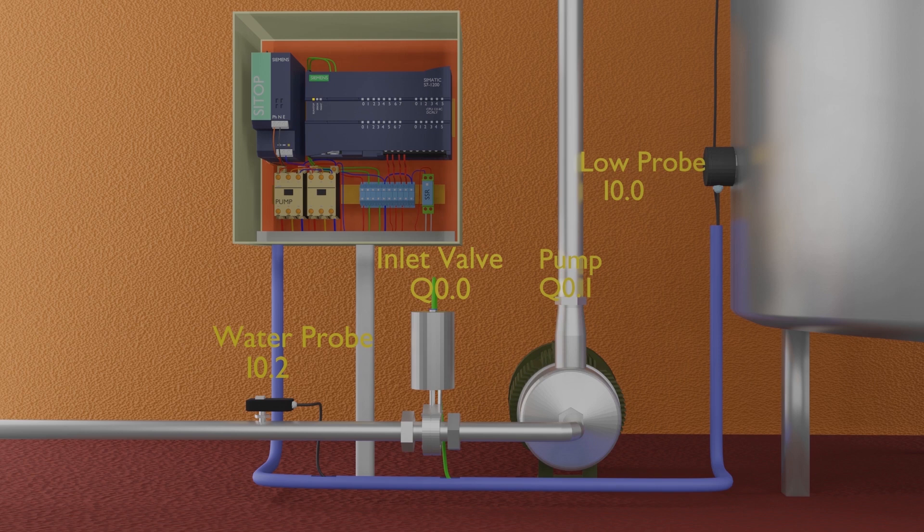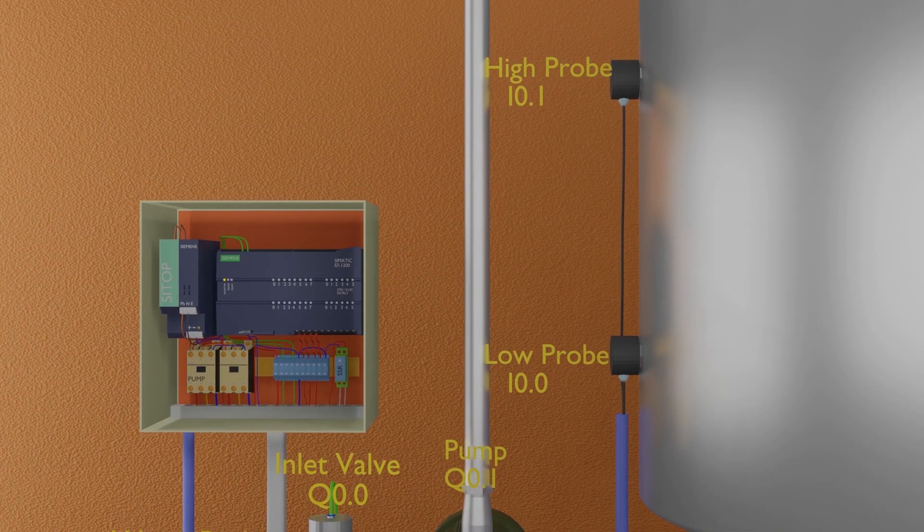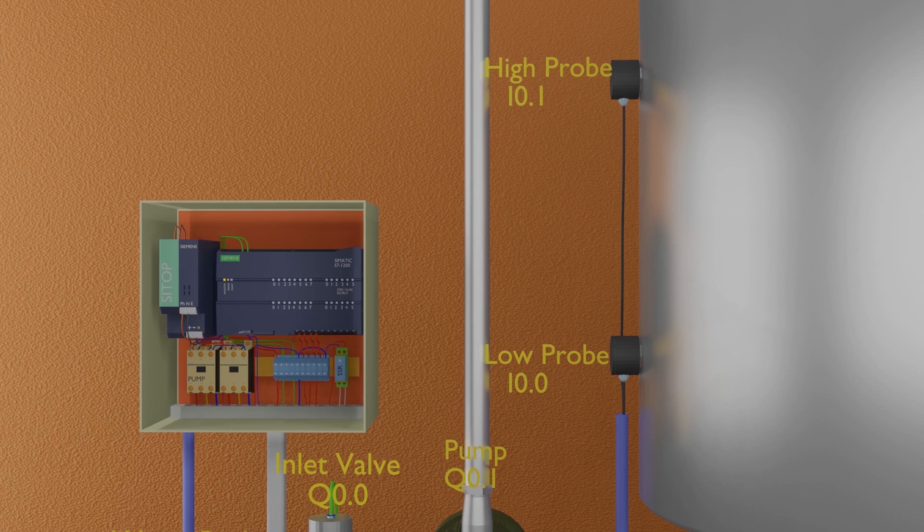Next, low water level and high water level probes are installed at PLC inputs I0.0 and I0.1 respectively.